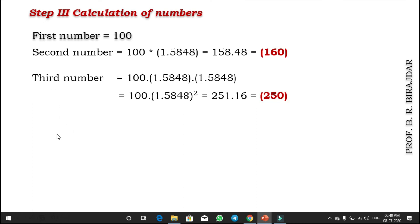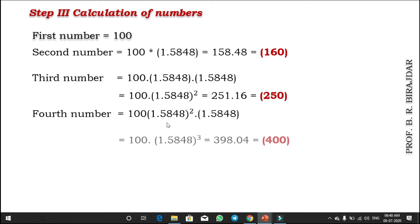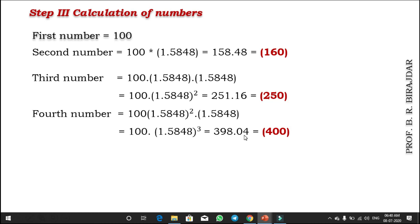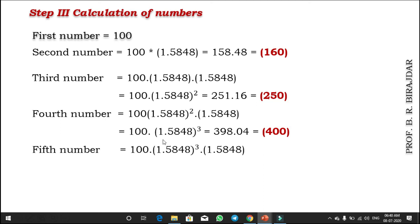We still need to reach 1000, so we continue. The fourth number: 100 × 1.5848³ = 398.04, which rounds to 400. For the fifth number, the fourth number multiplied by the ratio factor gives 100 × 1.5848⁴ = 630.81, which rounds to 630. We continue since the upper limit is 1000.